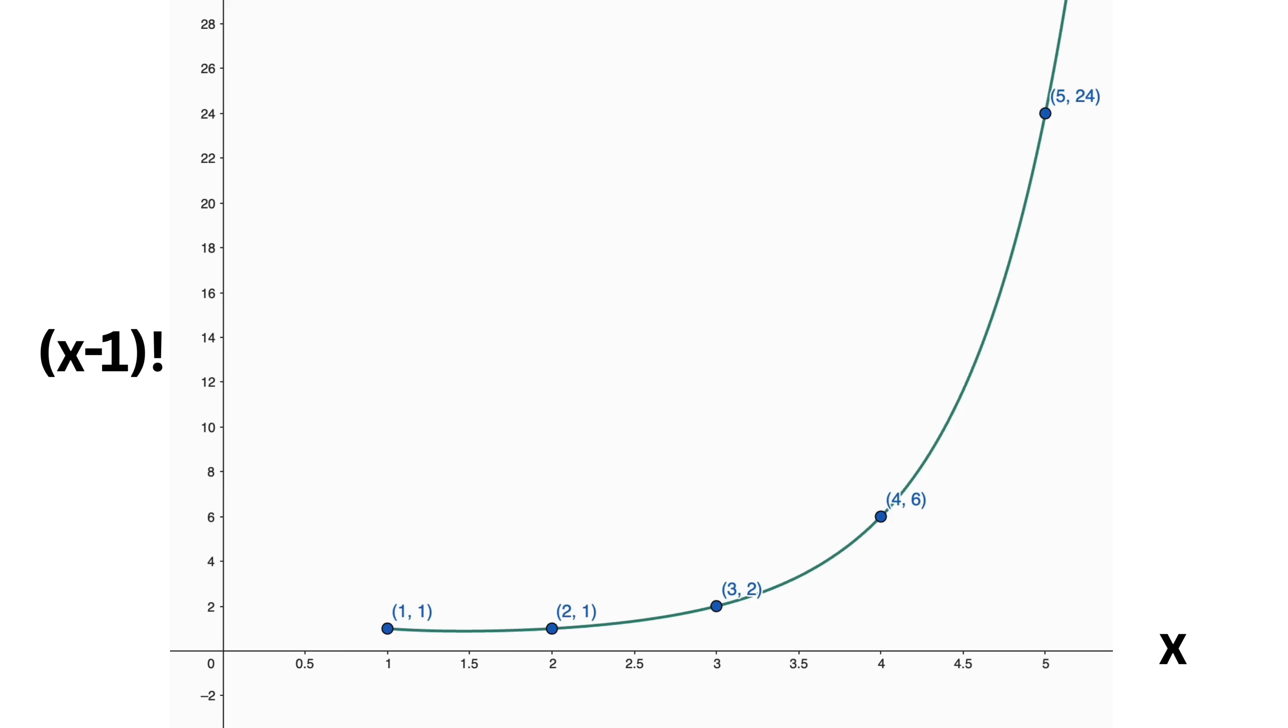First of all, he wants the function f of x with f of 1 to be equal to 1, which matches with the fact that 1 factorial is equal to 1. Also it must satisfy f of x plus 1 equals x times f of x, which could be the perfect extension of the factorial.